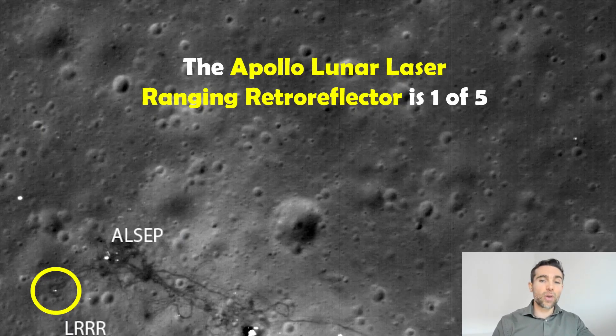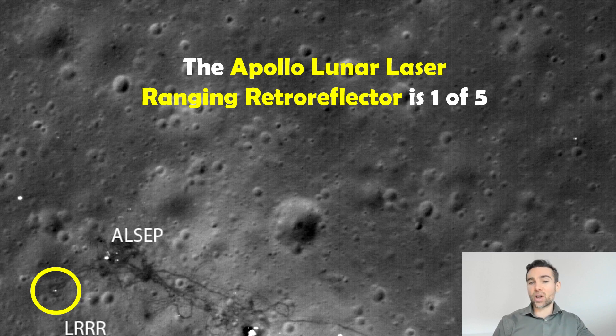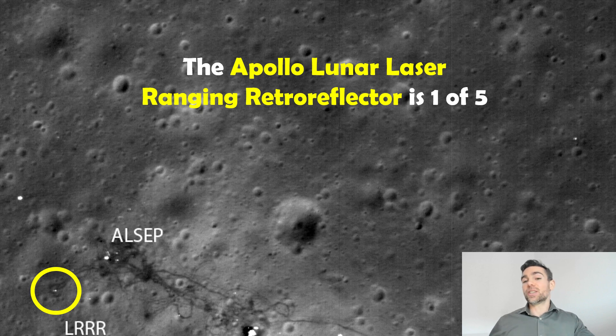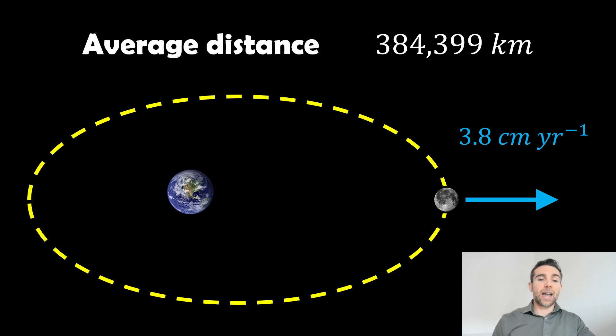There's one of the examples—the Apollo lunar laser ranging retro reflector. It's one of five. You can't see it that well, but it is there on the surface of the moon. If we do that, we get an average distance of around about 384,399 kilometers.